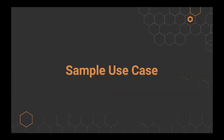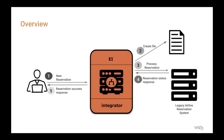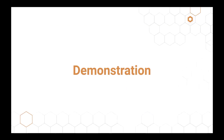Now let's move on to the sample use case we'll be demonstrating. The requirement is to expose an existing legacy SOAP service used for airline reservations as a RESTful API. Invoking this API should result in three tasks: first, communicate with the legacy airline SOAP service to make a reservation; second, create a file with the reservation information; and finally, forward the response from the legacy system back to the client. Now let's get started with the demonstration, which will be conducted by Sajitha.